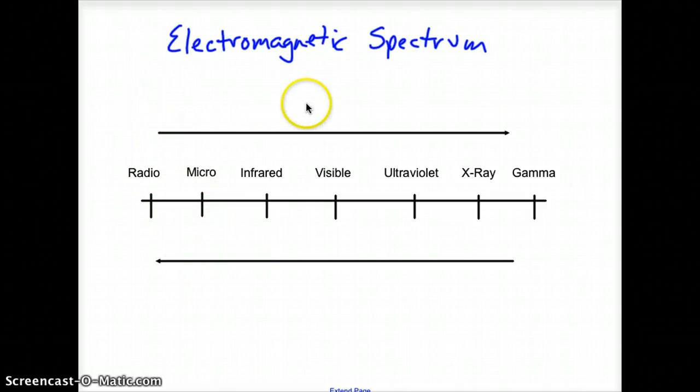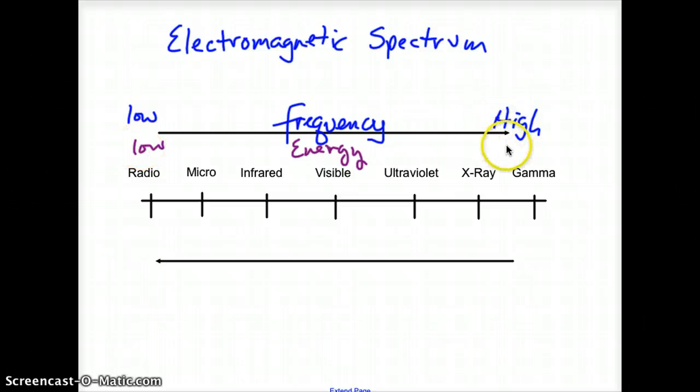As far as frequency, our frequency increases as we go from left to right on this graph. So this is going to be my low frequency waves. And these are going to be my high frequency waves. That also means this is also energy. We have low energy waves here. And these are our high energy waves here. I don't think it's a secret that gamma rays have higher energy than maybe a radio wave.